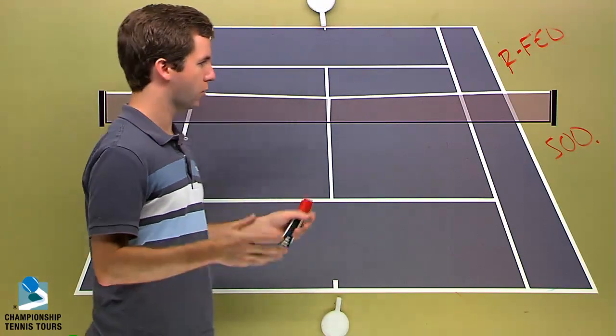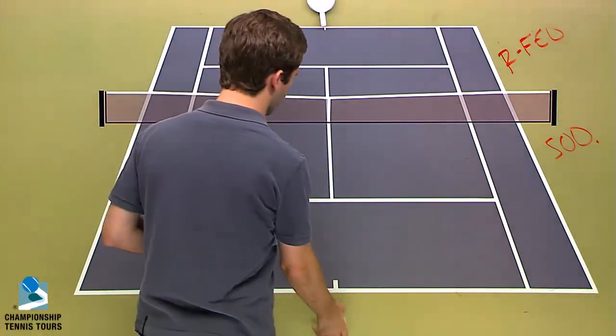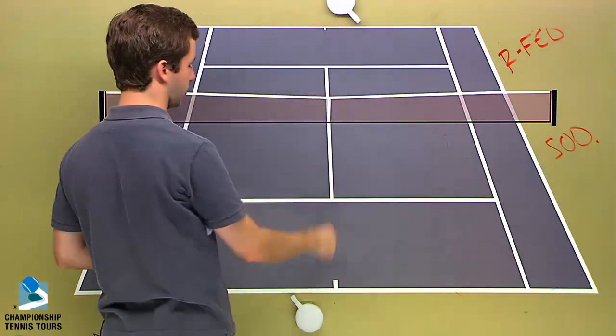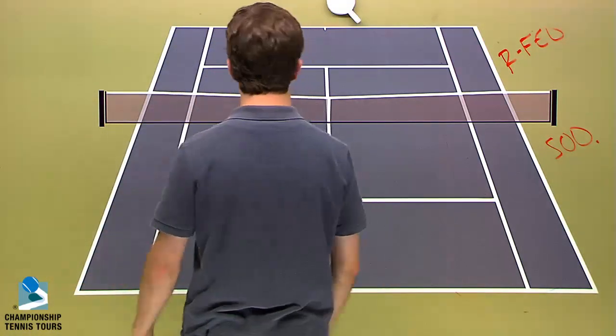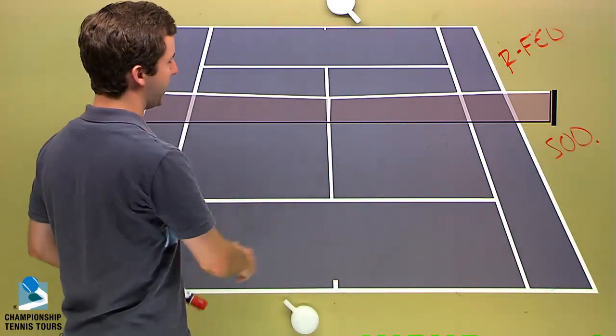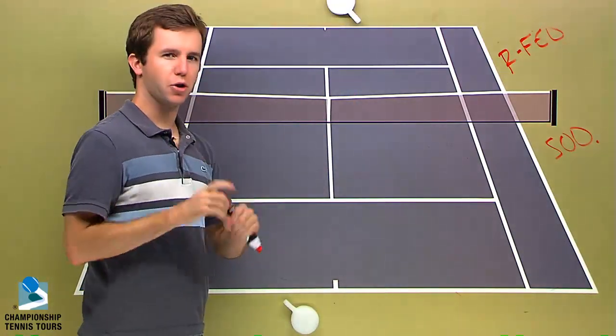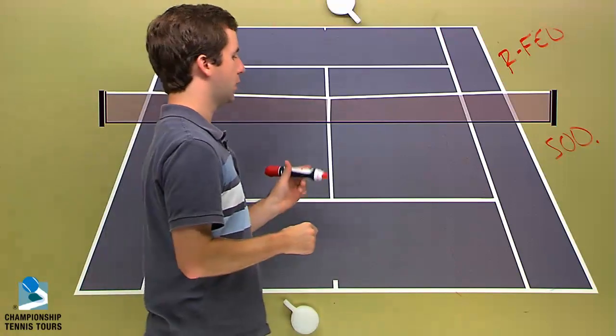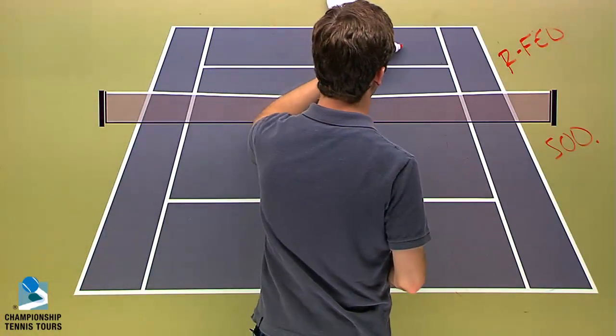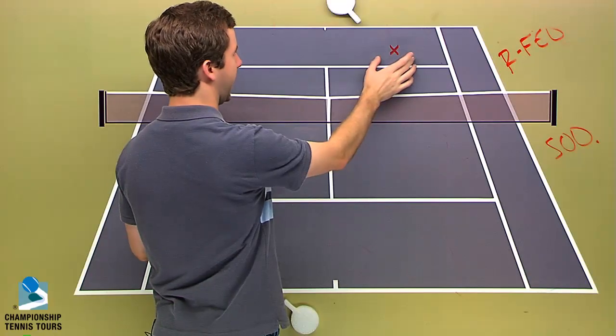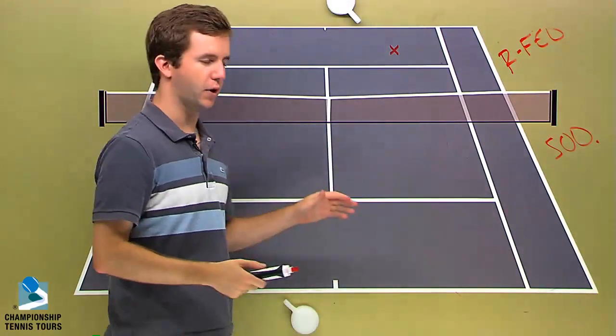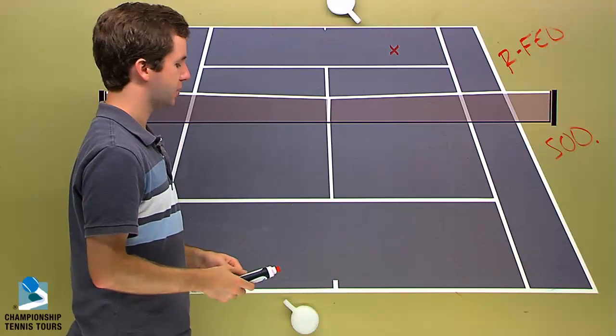What I think Soderling needs to do when we get these backhand exchanges - remember circle is a player, stick is the side they're hitting on, this is a righties backhand - you're going to get these backhand exchanges, and Soderling is going to have to be on point with his placement. He needs to keep most of the balls over in this area of the court, to prevent Federer from running around a lot of his backhands.